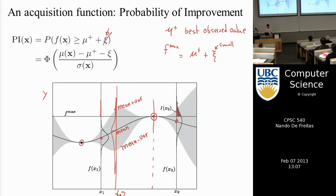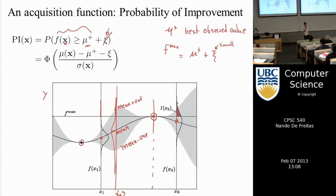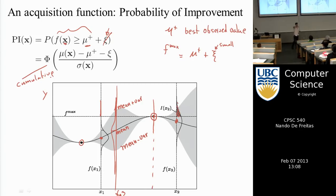Forgetting epsilon, what you're trying to do is maximize the probability that the function evaluated at the next point you try is higher than the best one you've seen so far. What is the probability that I will improve upon the best I've seen? That is the probability of improvement criterion. Since we have Gaussians, there is a formula for tail probabilities — essentially a cumulative Gaussian, phi.